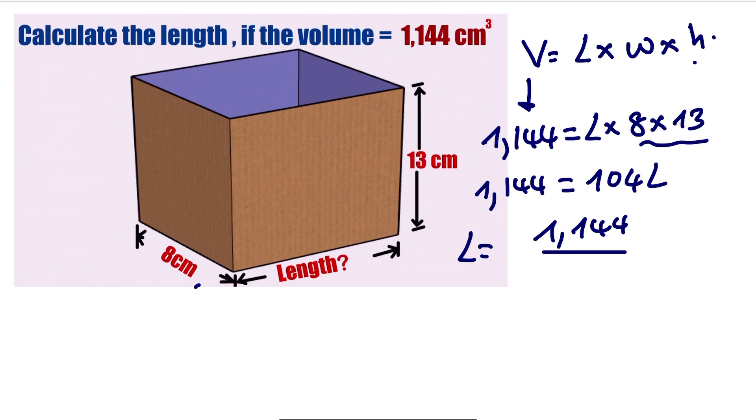We can use long division in case there's no calculator. It's easy. So we have 104 divided into 1,144. If we look here, 104 into 114 is going to go one time, so we have 1.